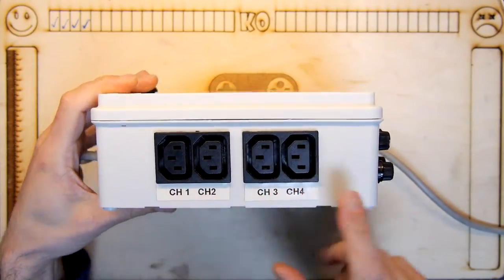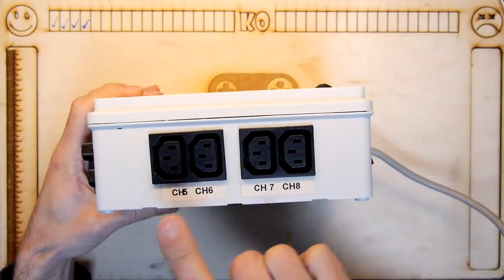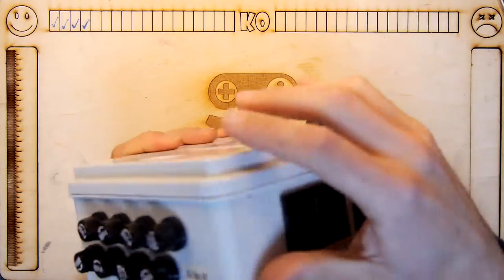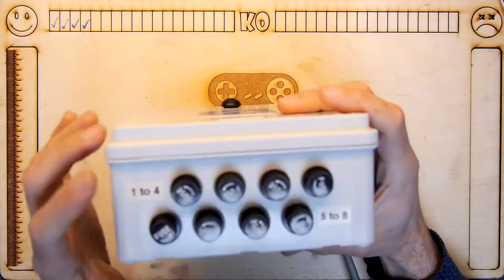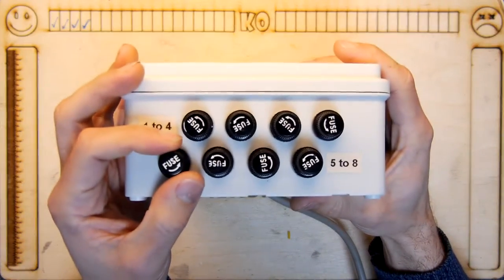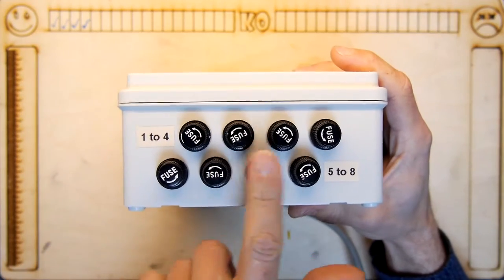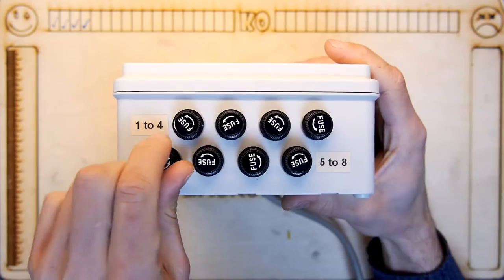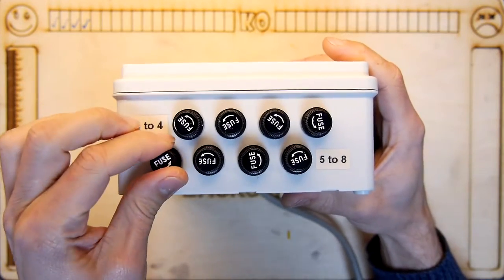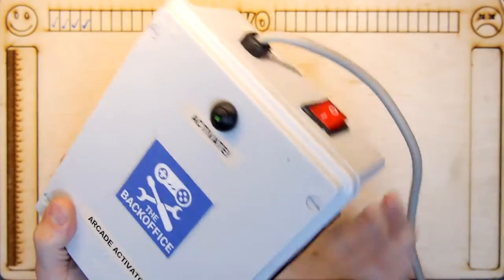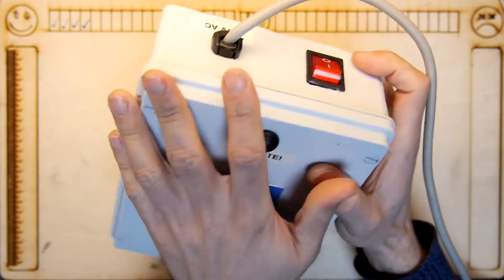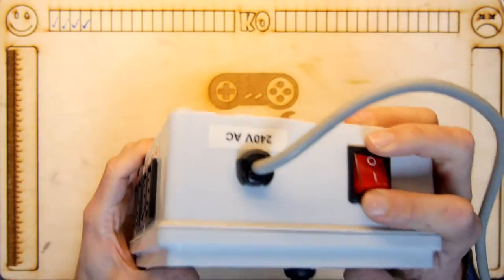So you'll see here channel 1, 2, 3, 4, 5, 6, 7, 8. These are relay operated outlets and on the bottom you have eight individual fuses. So each outlet has its own individual fuse so it's nice and safe. Although, do not try to change the fuse while the unit is plugged into the mains because that's never recommended.